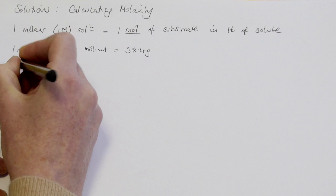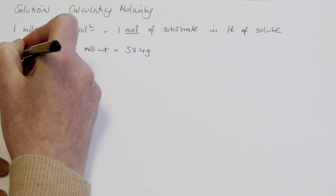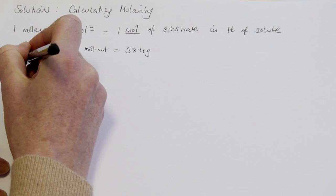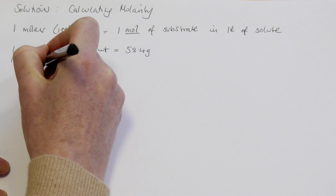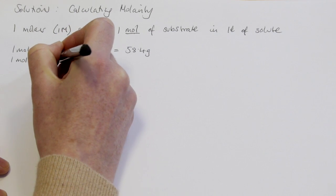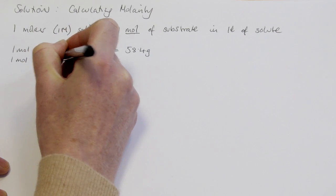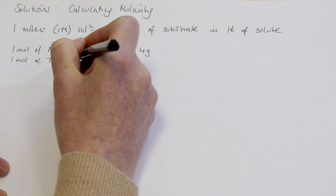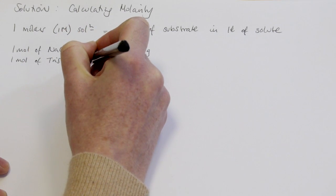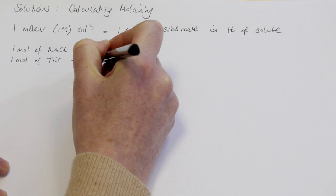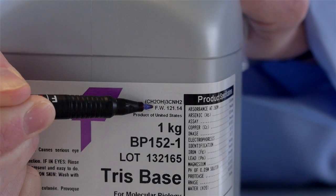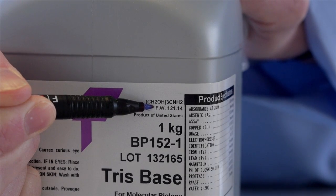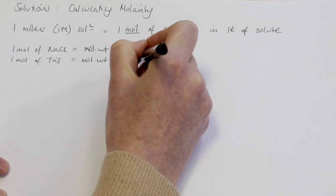If we were to do the same for another substrate, for example Tris, which quite often gets used in making buffers in molecular biology — one mole of Tris equals its molecular weight, which we can find to be 121.1 grams.